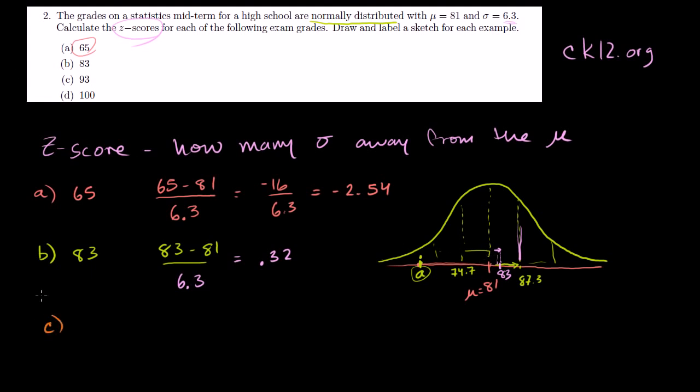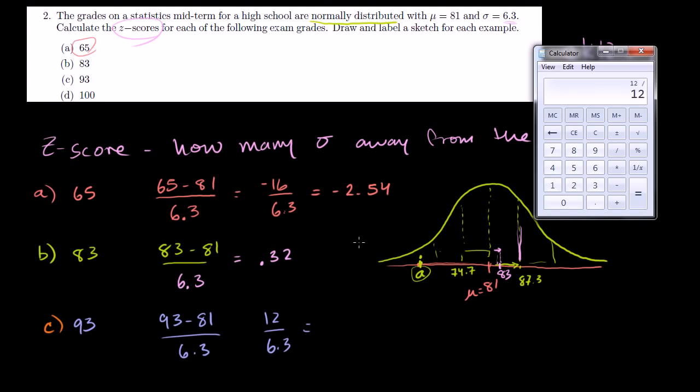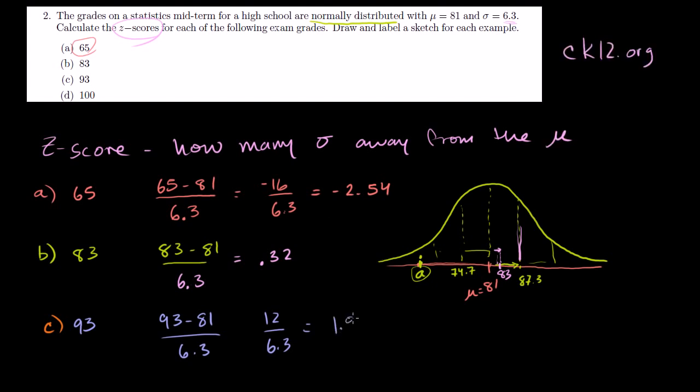Part C, 93. We do the same exercise. 93 minus 81 is 12. But we want it in terms of standard deviations. So 12 divided by 6.3 is 1.9 standard deviations. Its z-score is 1.9, which means it's 1.9 standard deviations above the mean.